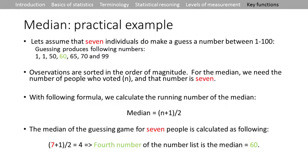With the formula, we calculate the position of the median as (n + 1) / 2. With seven people: (7 + 1) / 2 = 4. This means the median is the fourth number in the ordered list. Counting through: 1st is 1, 2nd is 1, 3rd is 50, 4th is 60 — so the median is 60. That's how simple the median works.